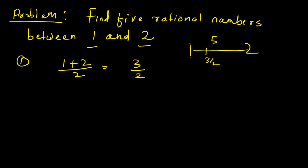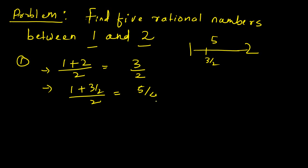Again, you can take the average of 1 and 3/2 and you will get one number that also will be within 1 and 2 — that will be the second number. So, the second one will be (1 + 3/2) divided by 2, which is nothing but 5/4.